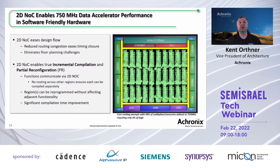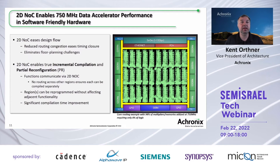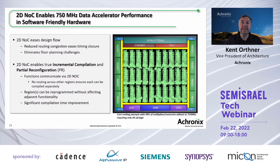This also enables true incremental compilation and partial reconfiguration. One team can place and route their block within a rectangle representing a couple of clusters, and later integrate it into a bigger device without redoing place and route — because there's so little overlap and interplay between different placement partitions. For partial reconfiguration, our solution is easy to use because accelerators being partially reconfigured use the local network access point for their communication needs and don't need to run across adjacent clusters to reach their endpoints.